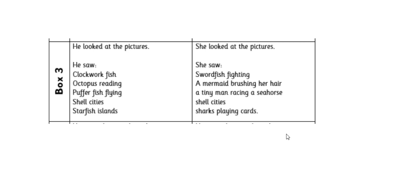Okay, we're moving on to box three. In Flotsam, Sam looked at the pictures and these are the things he saw. When you write the story next week, you're going to make the writing a bit more interesting, but these are just the basic ideas: clockwork fish, octopus reading, puffer fish flying, shell cities and starfish islands. Now, because my main character is also at the sea, I can take some of these ideas and use them. If your main character found the camera somewhere else — maybe buried underground — they probably won't have things you would find at the sea. My main character Fran saw swordfish fighting, a mermaid brushing her hair, a tiny man racing a seahorse, shell cities, and I borrowed one of Bea's ideas from yesterday — sharks playing cards.